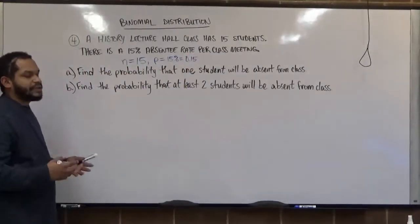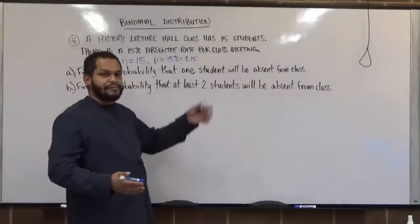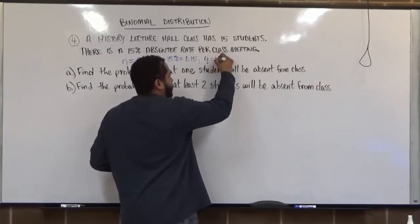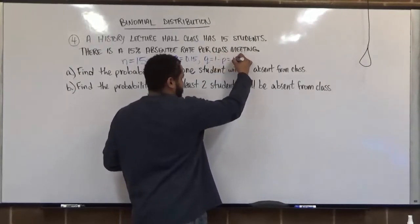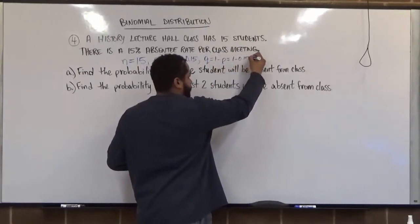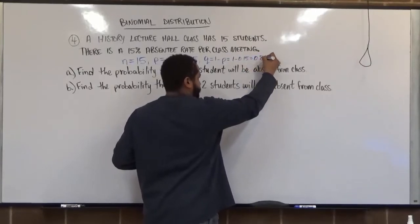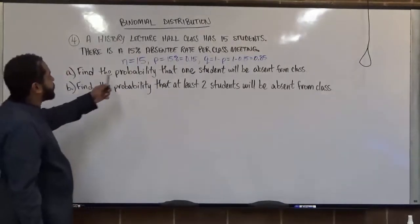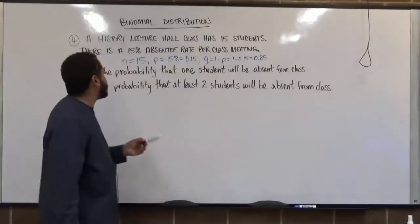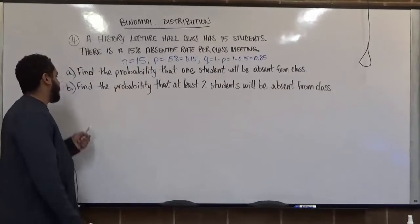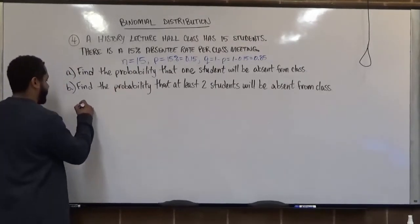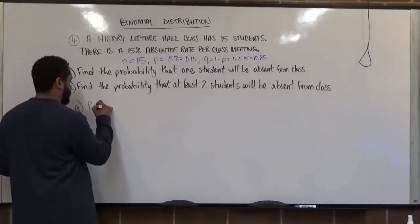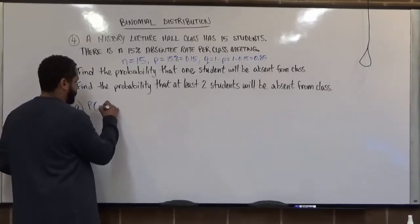Since we have P, we know the probability of failure is the complement of P. To find Q, we take 1 and subtract P, which becomes 1 minus 0.15, giving us 0.85. We now have three of our four components. The last component comes from each question. For part A, we want to find the probability that X equals 1.